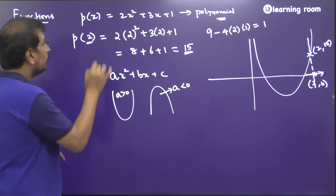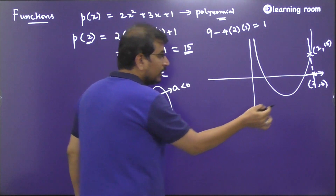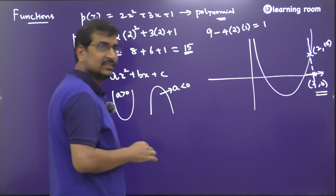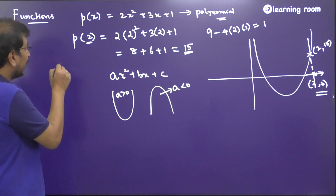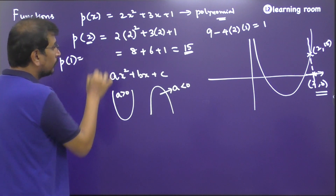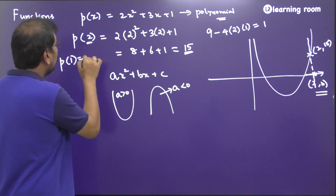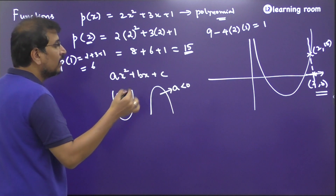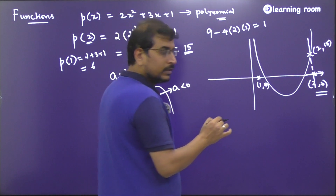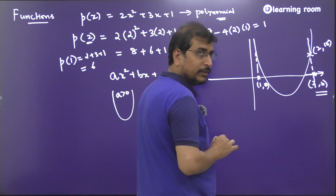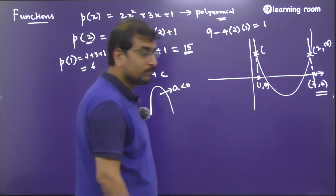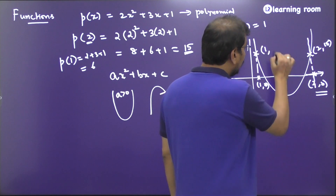So for this parabolic shape, when the x-coordinate is 2, the corresponding y-coordinate is 15. Similarly, p(1) = 2 + 3 + 1 = 6. If I have the point (1, 0) and drop a vertical line, it cuts the parabola at (1, 6). Are you able to visualize what is the meaning of the values you have been finding? The same applies for cubic polynomials.